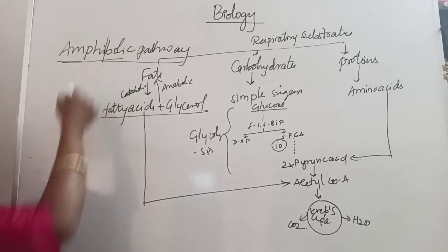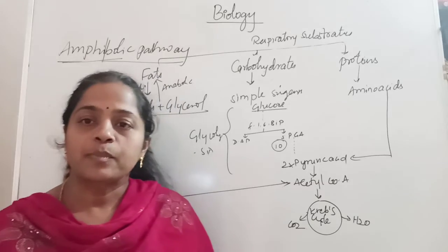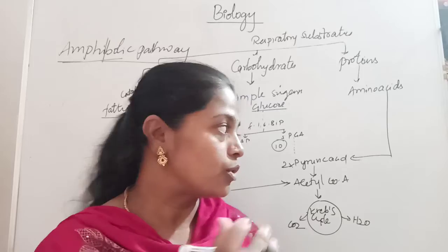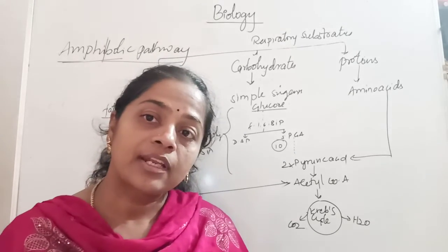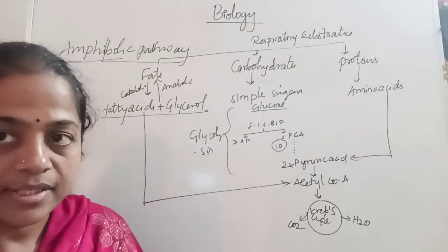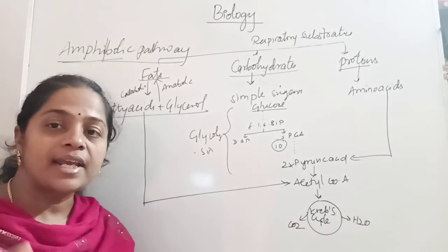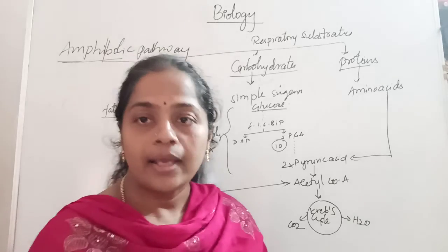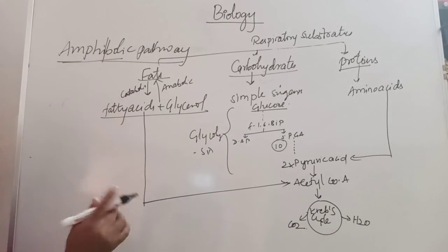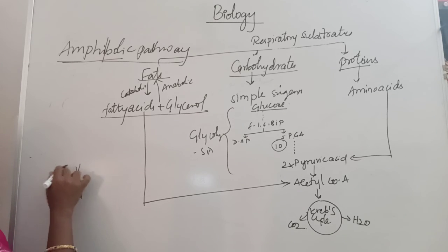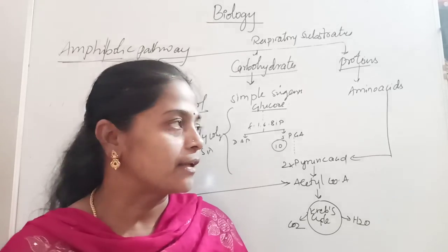Hence respiration is called an Amphibolic Pathway. Respiration takes place via both catabolic and anabolic reactions — two reactions, two ways, two pathways. The major respiratory substrates are fat, carbohydrate, and protein. These three undergo biological oxidation which produces heat and energy. They are also directly utilized by various body functions. Clear? Thank you.